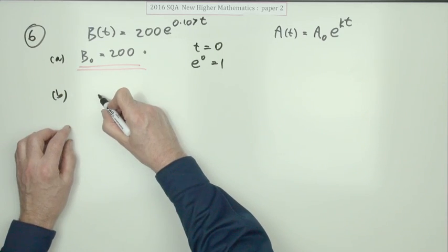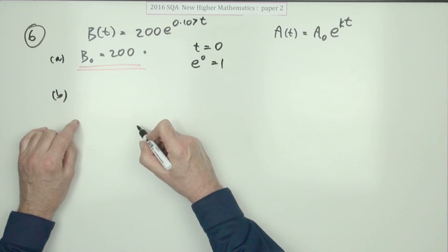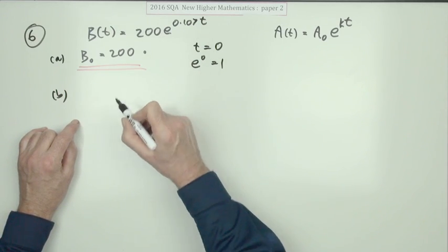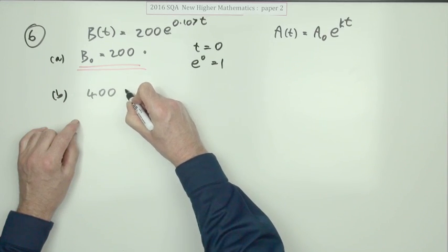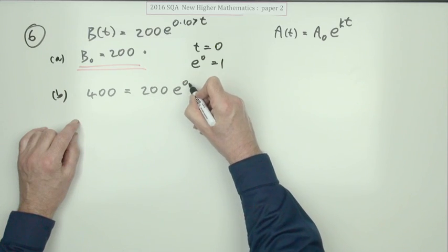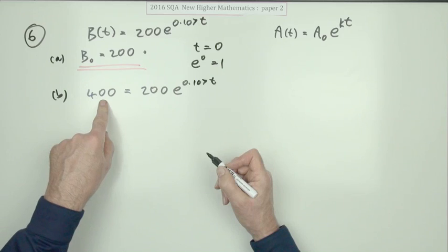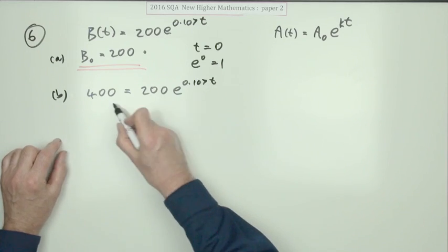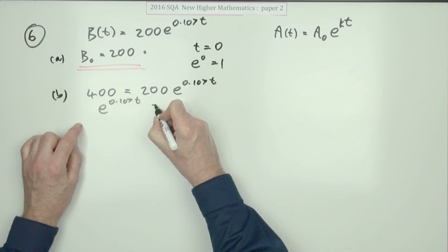But you're probably better off, especially in situations where it's not as neat as doubling, to make the statement explicitly. Doubling means going from 200 to 400, so the question becomes: how long would it take for 200 to become 400? Substituting 400 into the equation and dividing through gives you e to the 0.107T equals two. That's the first mark.